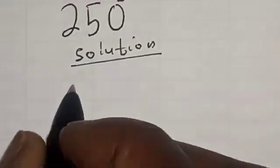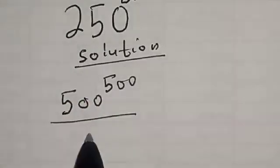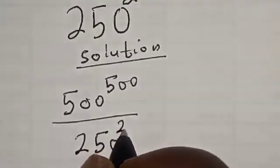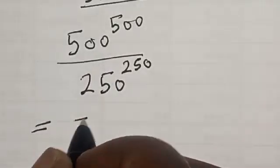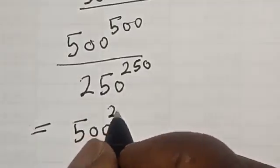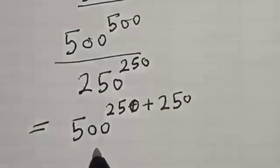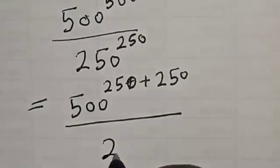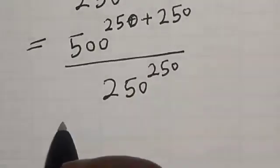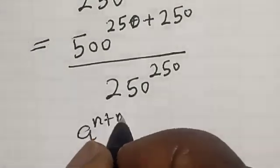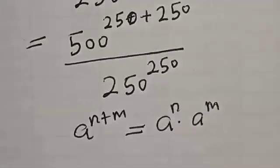We have the given problem: 500 raised to power 500 divided by 250 raised to power 250. This is equal to 500 raised to power 250 plus 250, divided by 250 raised to power 250. Remember this rule: if you have a raised to power n plus m, this is equal to a raised to power n multiplied by a raised to power m.